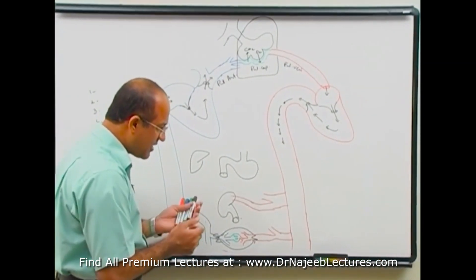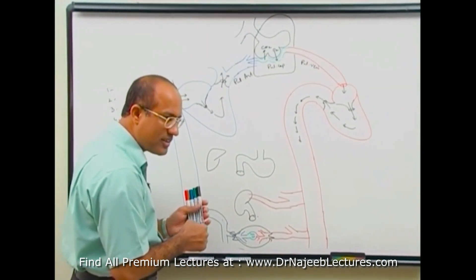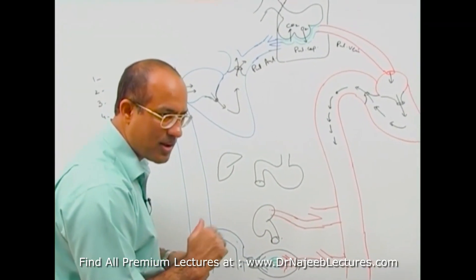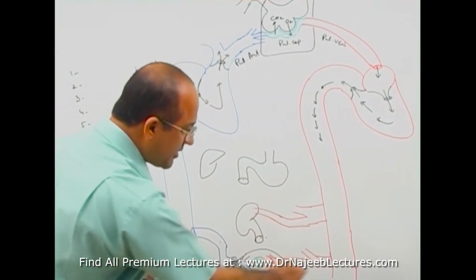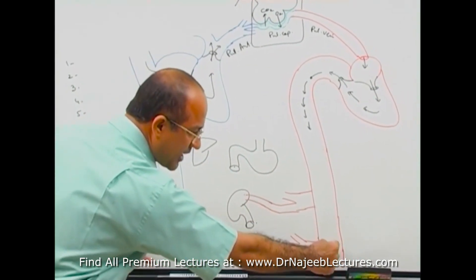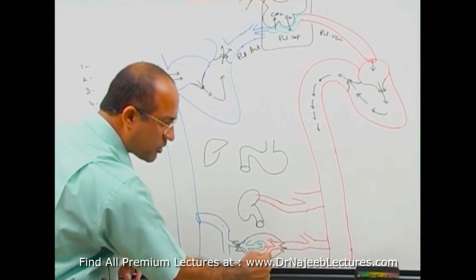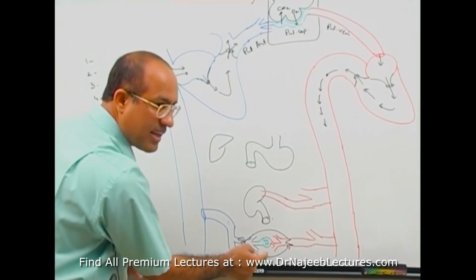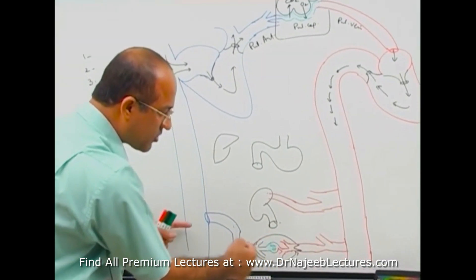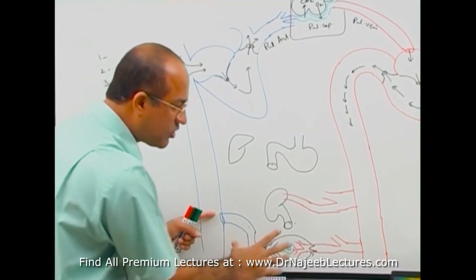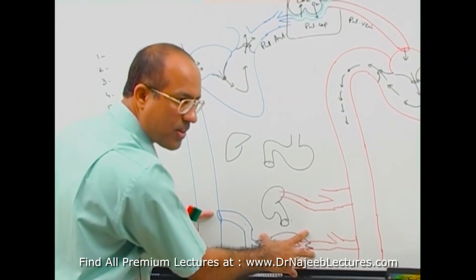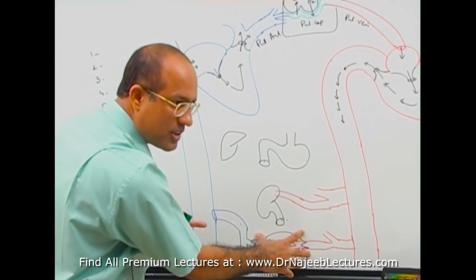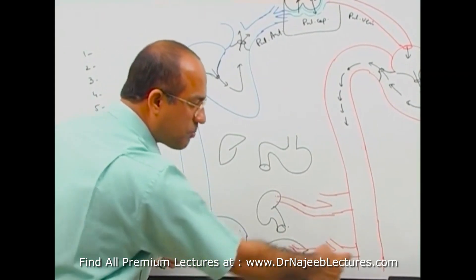Somewhere in the body, in some parts of the body, circulation is a little bit altered. The common theme is that the arterial system should bring blood to the tissue, then there should be a capillary exchange area, and then the venous system should be the drainage. This is what happens in most areas of the body, but some parts do not follow this simple rule.